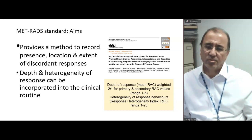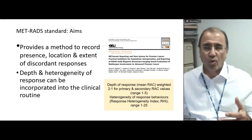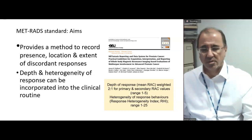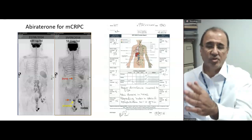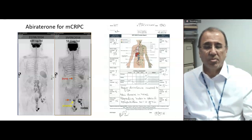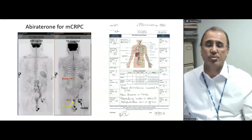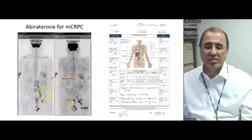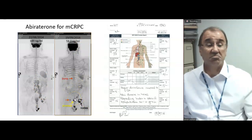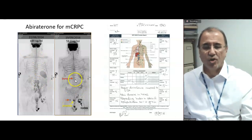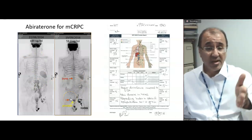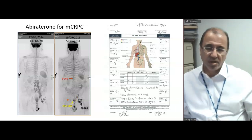We noted excellent response at all known disease sites. One of the aims of METRADS was to codify and record the presence of discordant responses, because discordant responses are important. Here is a patient receiving abiraterone for metastatic castration-resistant prostate cancer. The PSA has gone down, but looking at disease before and after, you can clearly see discordant responses. This is predominantly nodal disease: on abiraterone the patient progressed in the groins but responded in retroperitoneal lymph nodes. And there are now new bone metastases — the disease has shifted from nodal to bones and nodes.